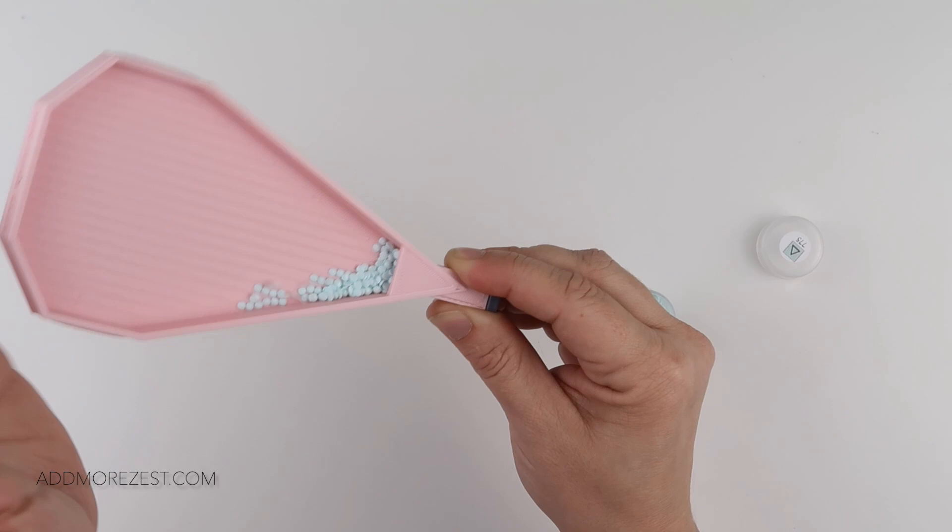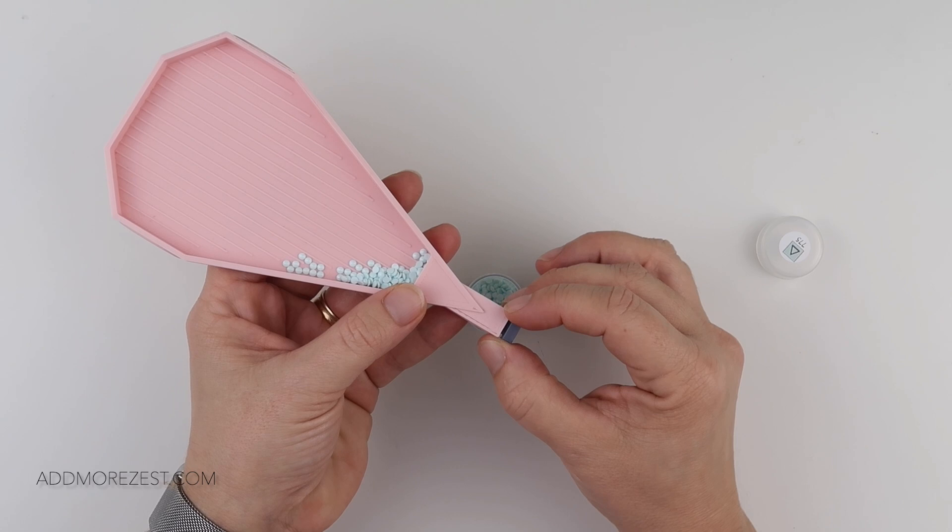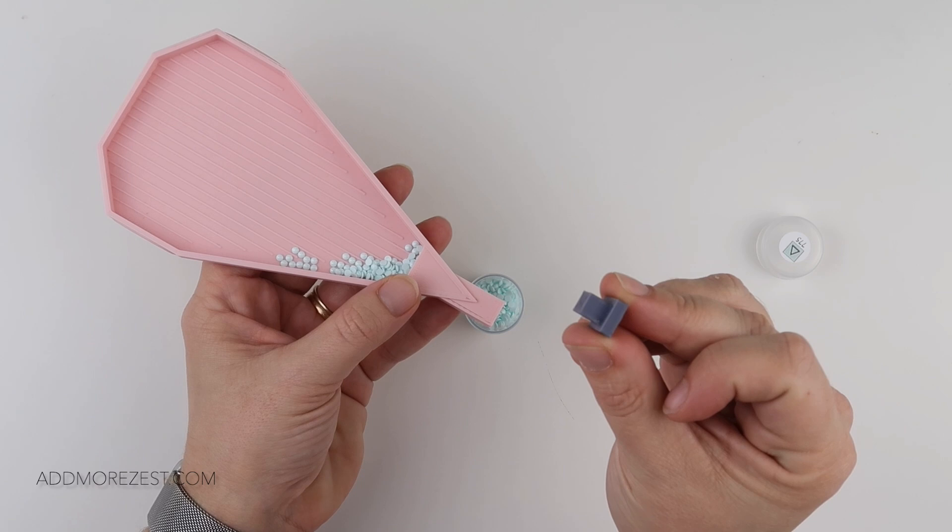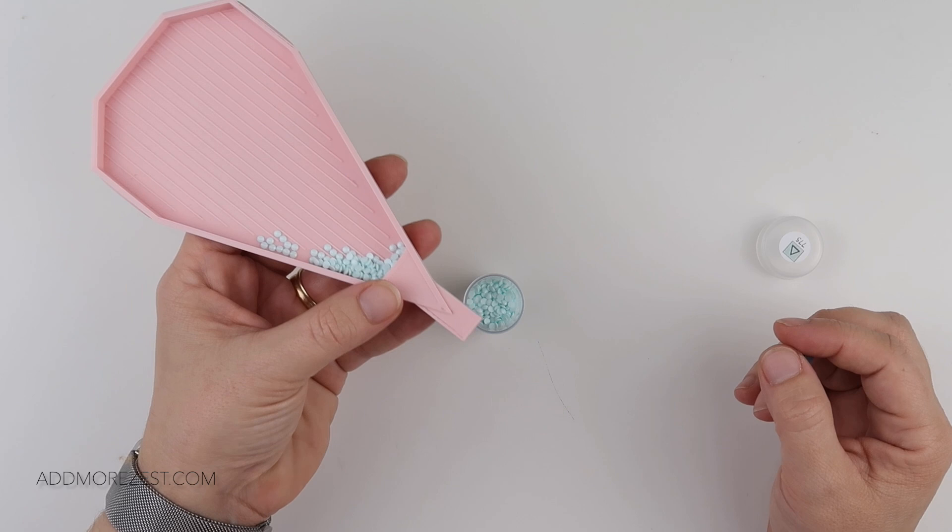And then hold your tray over whatever storage it is that you're using, remove the stopper. And if you think about it, once you've removed the stopper, you do have that amount of space in the spout where the diamonds are not coming out, so you do have that little bit of leeway before the diamonds start moving.